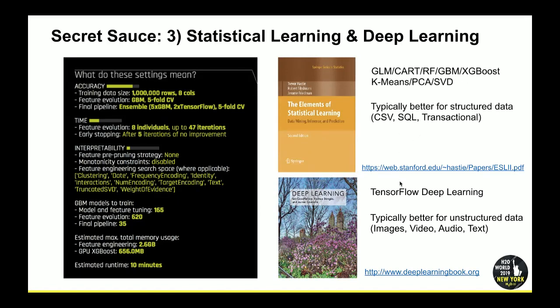If you have a text column and a bunch of numeric columns in your dataset, you can have the best of both worlds. You can have TensorFlow and GBMs in an ensemble. TensorFlow can make a transformer that converts text into a vector or a prediction number — for example, it can automatically transform a tweet into a sentiment number saying whether the sentiment is good or bad, all done automatically in parallel. This is quite a time saver.